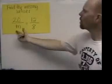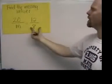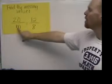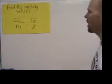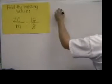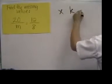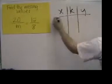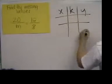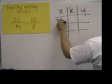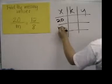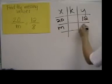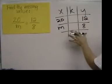This is a proportion problem where we have two equal ratios, however one of the values is missing. We don't know what this value m is. So we're going to put this value and these two ratios in an x/y table. 20 and m goes right here, 12 and 8 go right here.